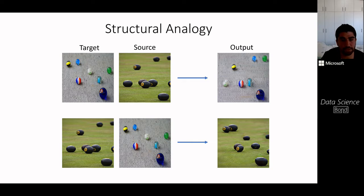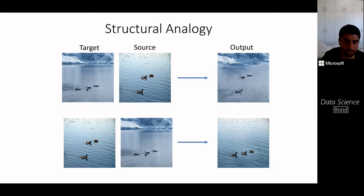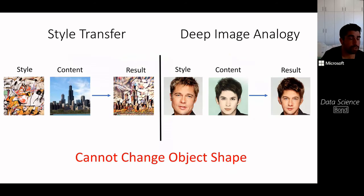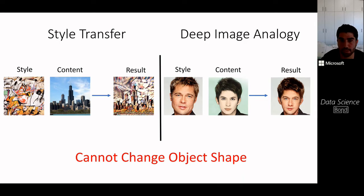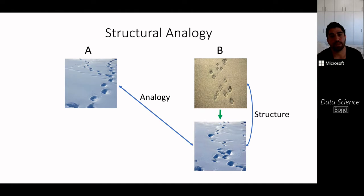We can do this in the reverse direction as well — for example, translating between ducks and orcas, or pumpkins and balloons. You might ask: is this similar to style transfer? It is, but both style transfer and deep image analogy operate on a pair of images and cannot change the shape of objects. Notice how in style transfer, the shape of the building and the face remains intact. In contrast, our method can change the shape of objects while creating analogous solutions.